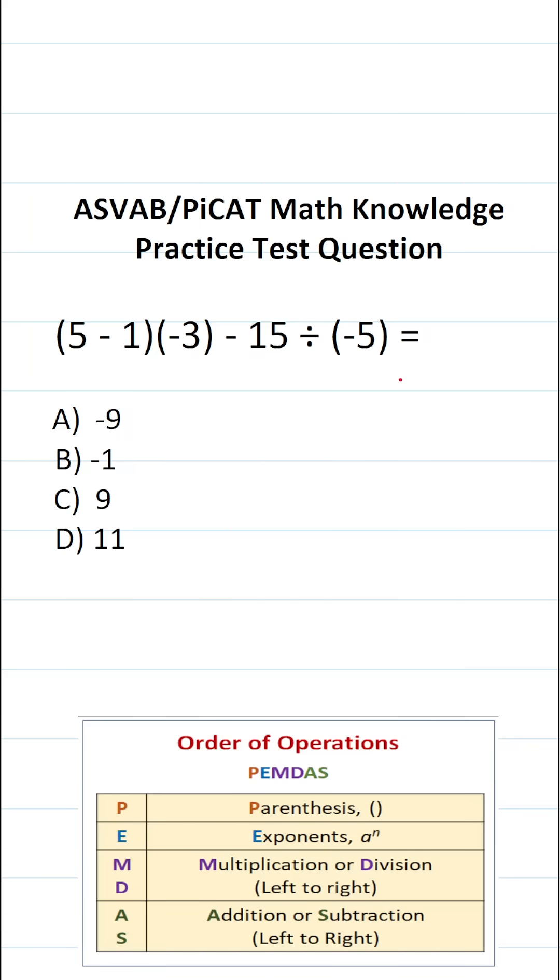This math knowledge practice test question for the ASVAB and PiCAT says 5 minus 1 in parentheses times negative 3 minus 15 divided by negative 5 equals.